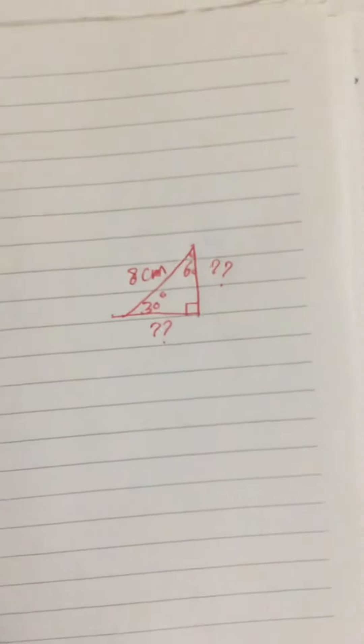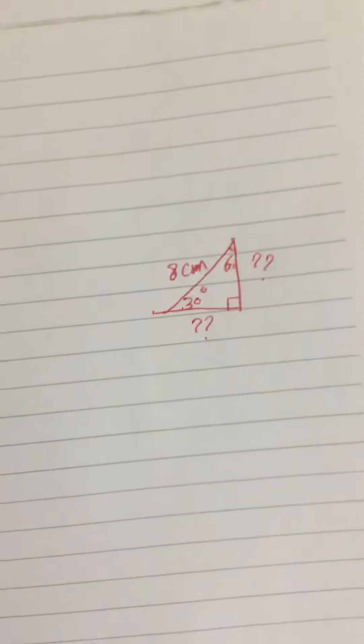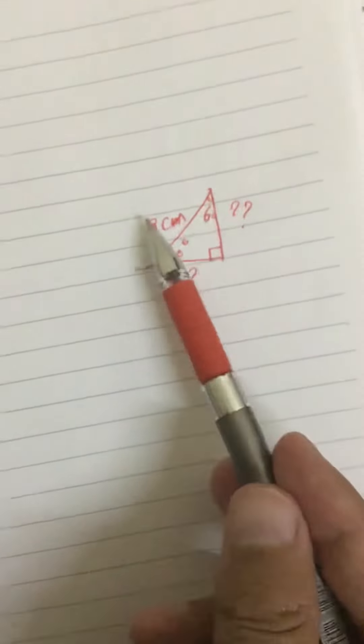How do you find it? There is a rule saying if you want to find the side opposite the 30 degree, the length will be half of hypotenuse. So that's 8, the half will be four centimeter.